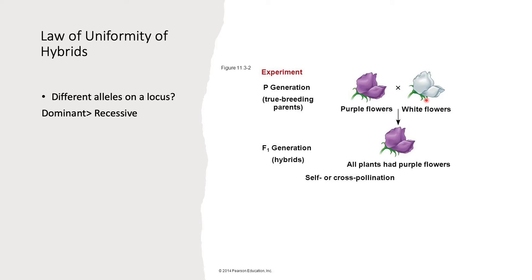Our true breeding parents have different alleles. This has a purple allele on the locus, and this has a white allele on the locus or on the position of the chromosome. So what happens is, the first generation, their offspring, is going to basically have the appearance of whoever is dominant. The dominant is going to take over the recessive.